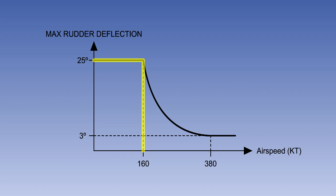This graph depicts the operation of a typical ratio changer. You can see that full rudder is available up until 160 knots. The travel then reduces progressively until at 380 knots, only approximately 3 degrees of travel is available with full pedal deflection.